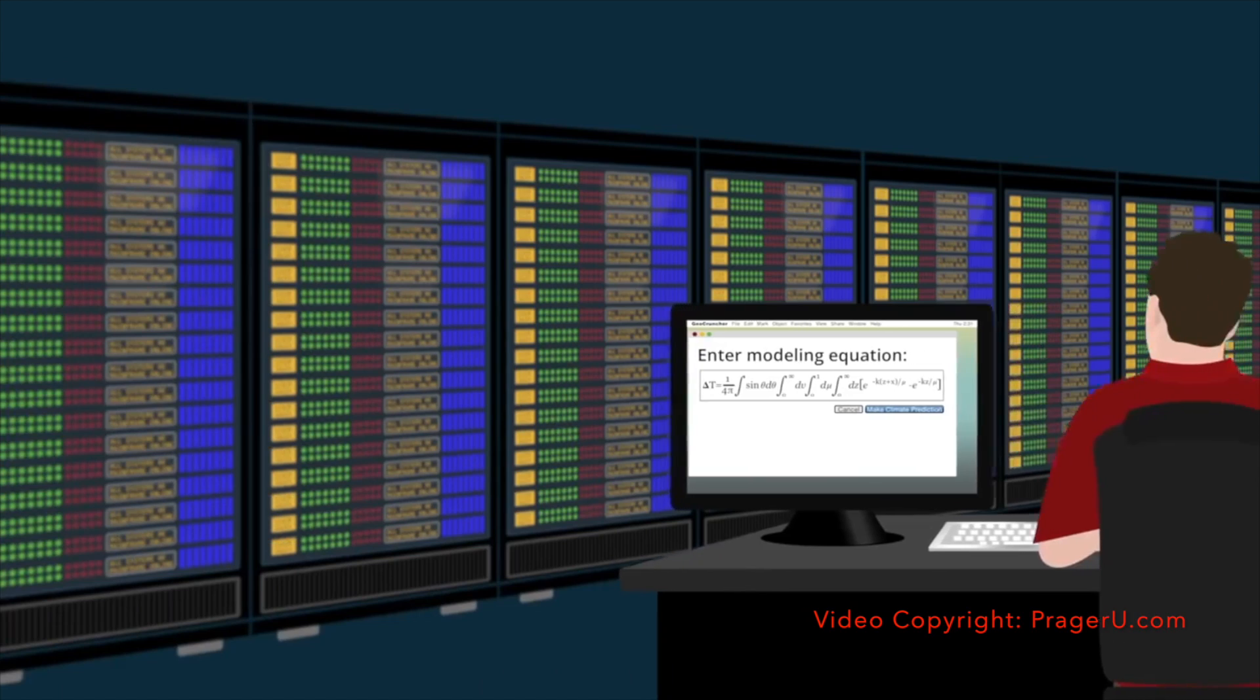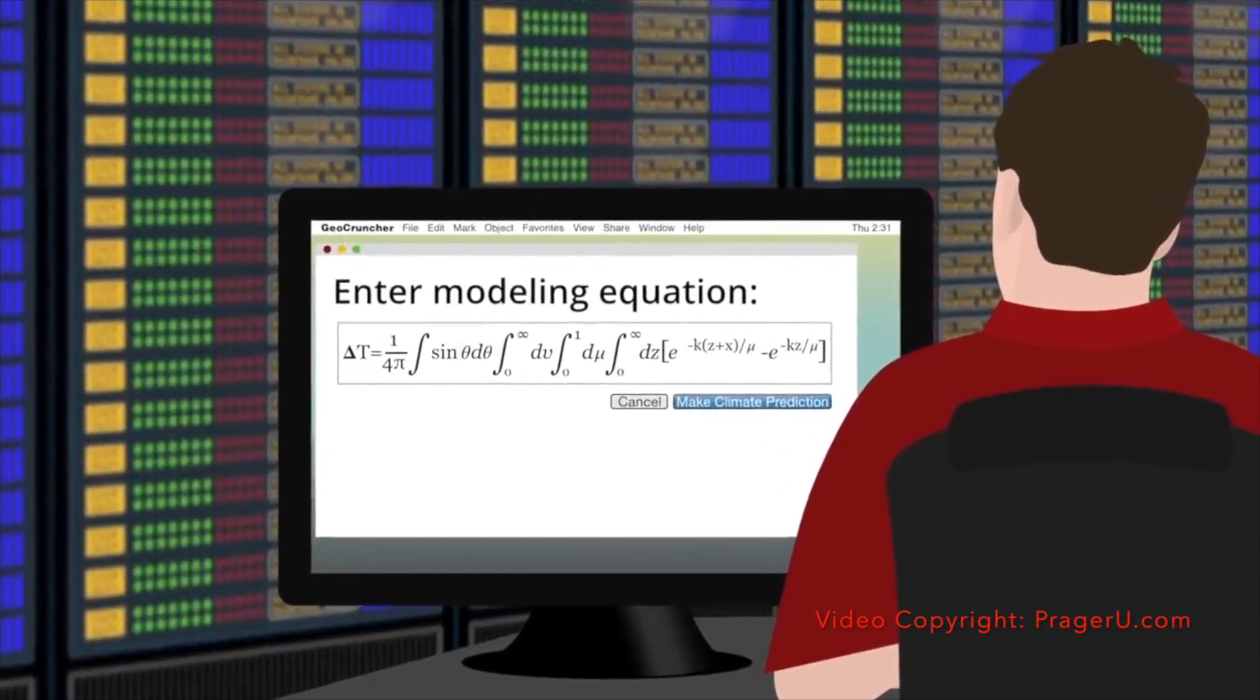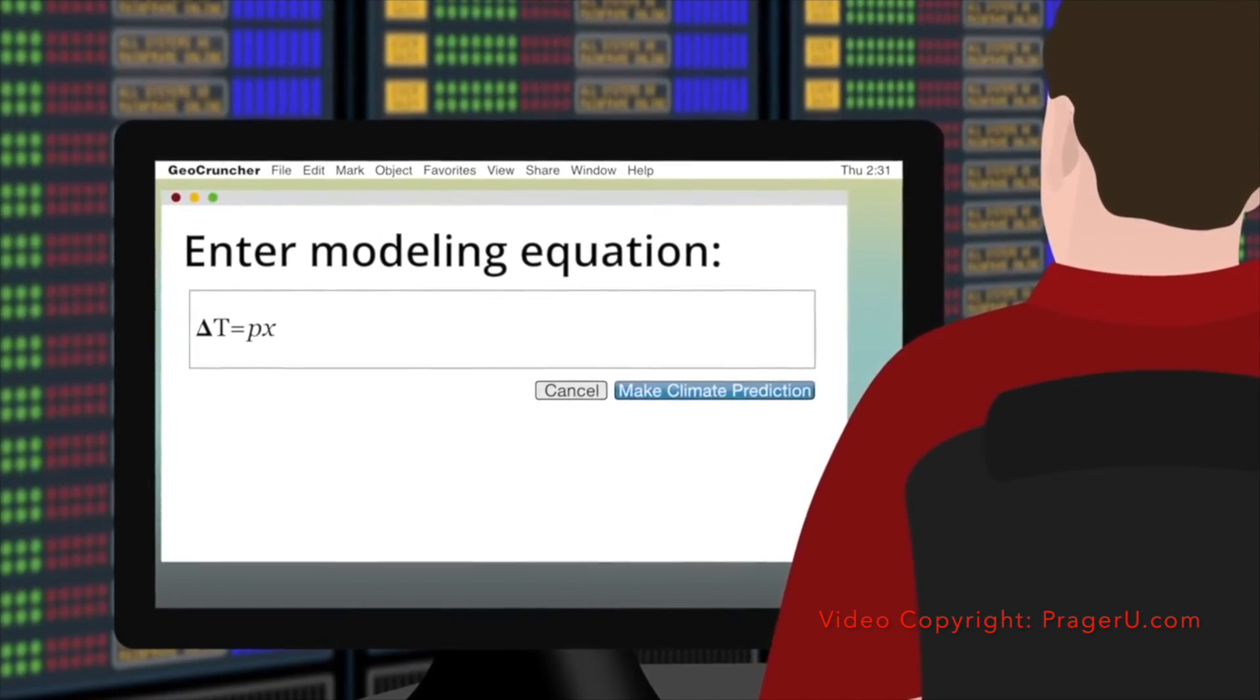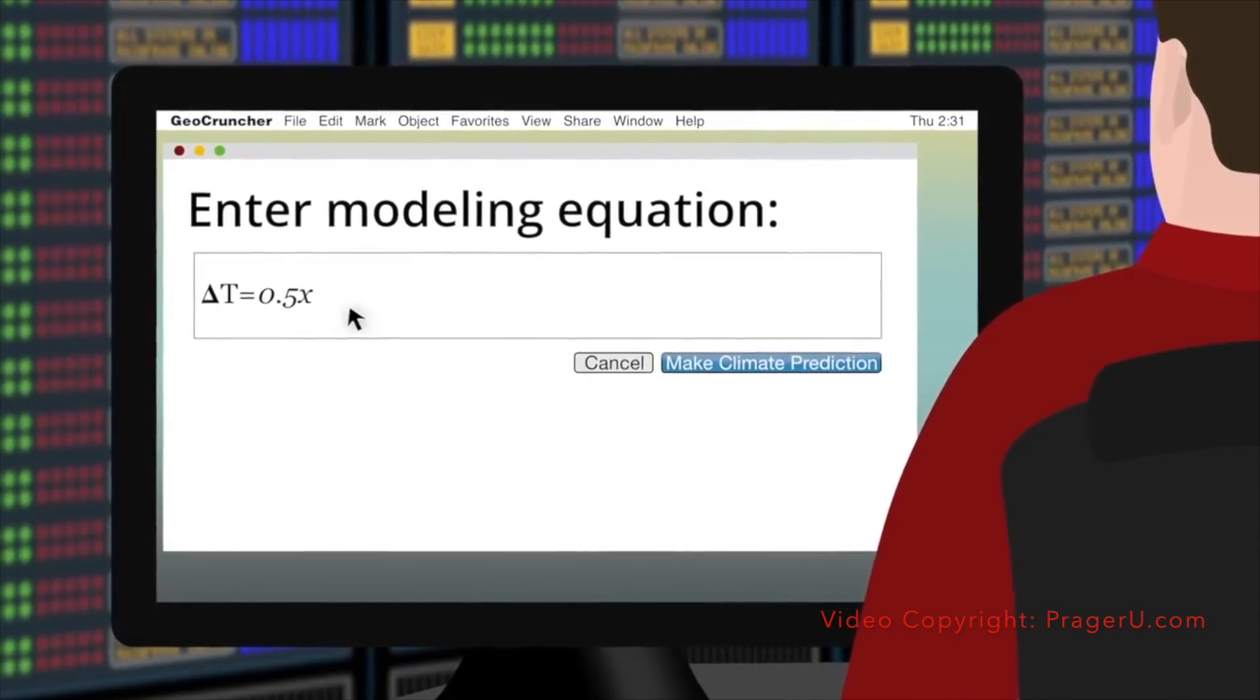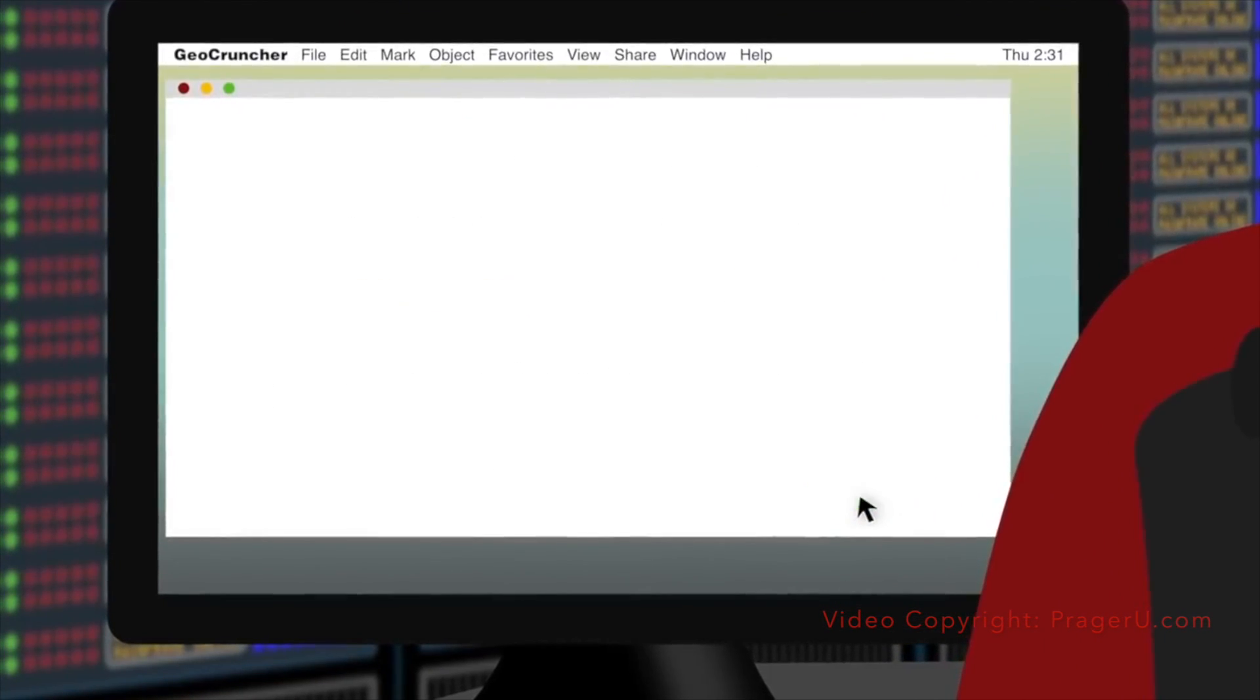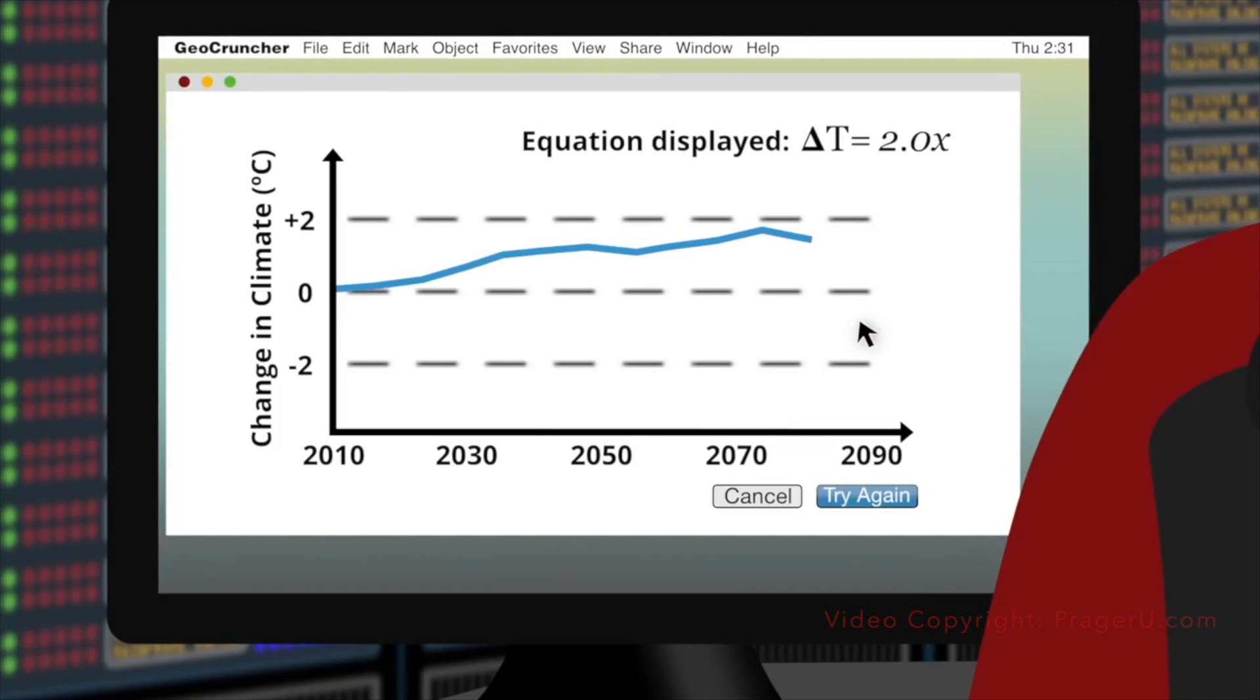Instead of admitting this, some climate scientists replaced the highly complex equations that describe the real-world climate with highly simplified ones, their computer models. Discarding the unmanageable details, modelers tune their simplified equations with lots of adjustable inputs, numbers that can be changed to produce whatever result the modelers want. So if they want to show that the Earth's temperature at the end of the century will be 2 degrees centigrade higher than it is now, they put in the numbers that produce that result. That's not science. That's science fiction.